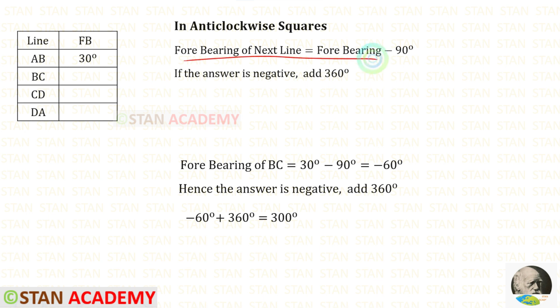Using this formula, let us find the fore bearing of BC. 30 minus 90 degrees, we will get minus 60 degrees. We know that if the answer is negative, we have to add 360 degrees. Minus 60 degrees plus 360 degrees, we will get 300 degrees.